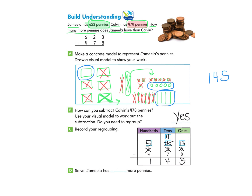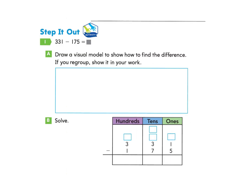Chamelea has 145 more pennies. Nice work. Let's take a look at the next page, page 409. Here they give us the equation 331 take away 175 equals the answer. The first part asks us to draw a visual model to show how to find the difference. If you regroup, show it in your work.